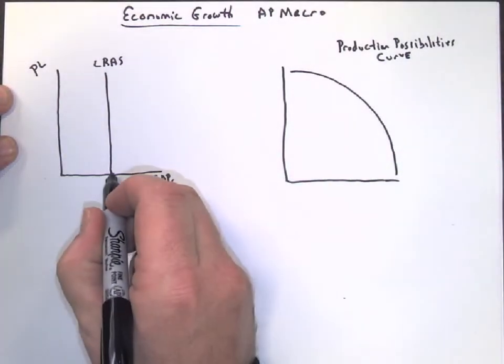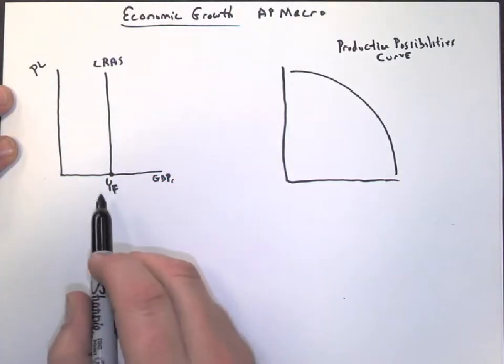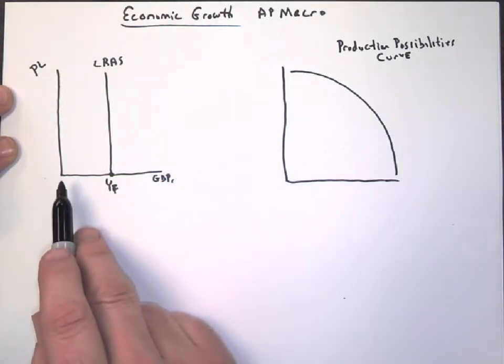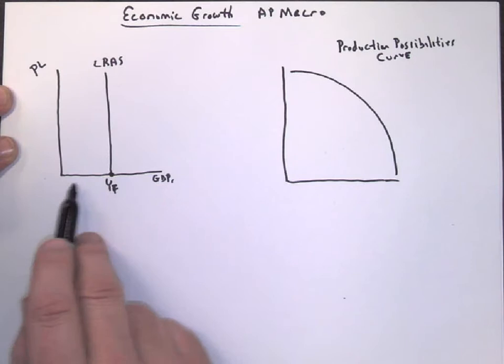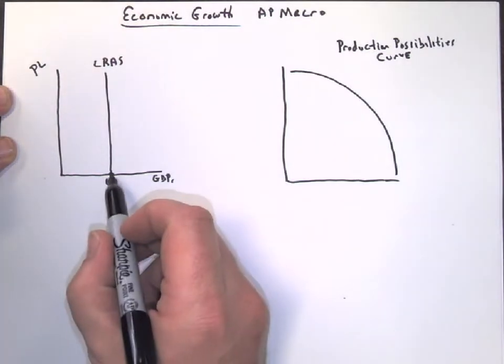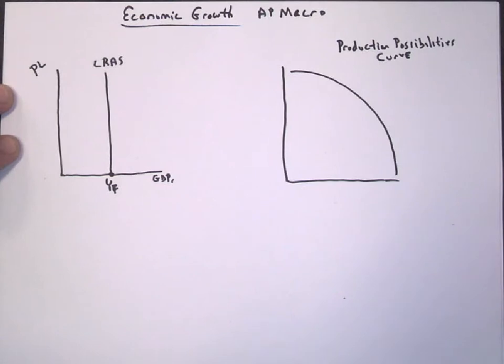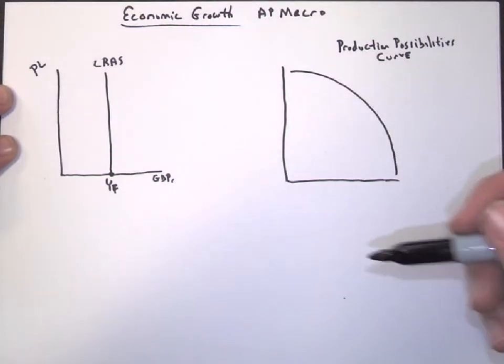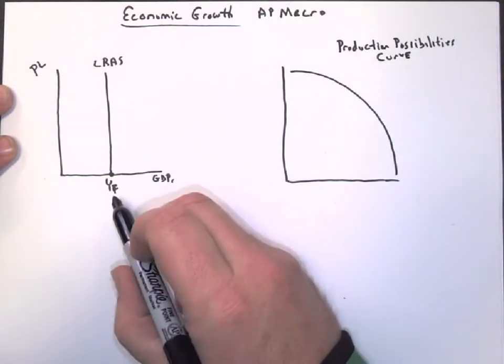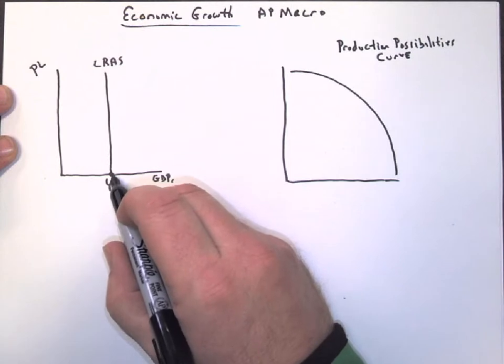So what this one right here is telling us is that on this x-axis, remember we increase from left to right, and this is going to be an amount. So at this point right here, our economic capacity to produce GDP means we have potential GDP. If everyone is working, then we would make this much.